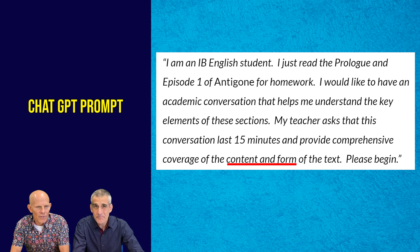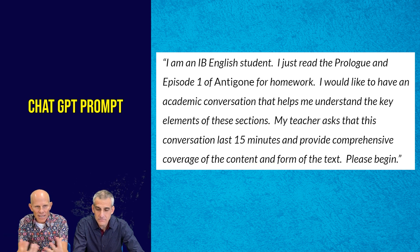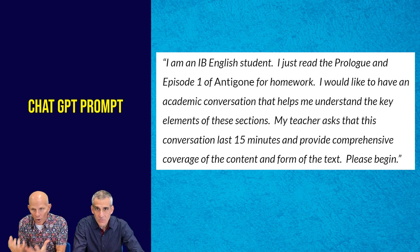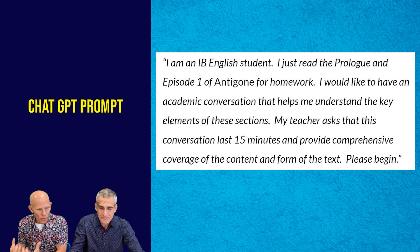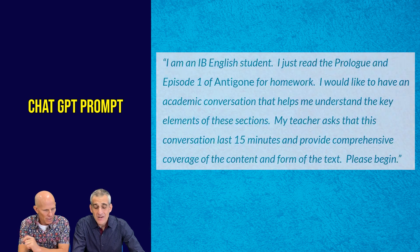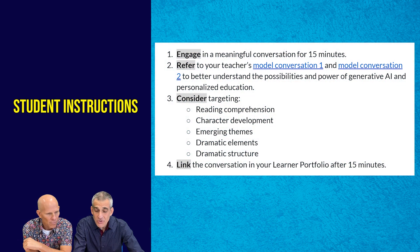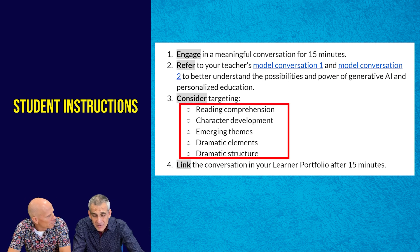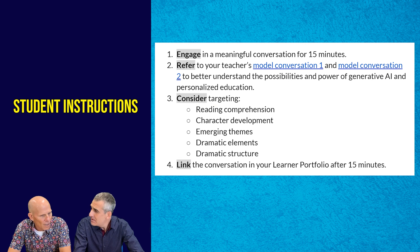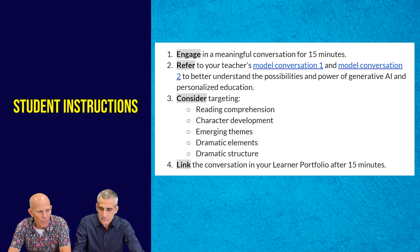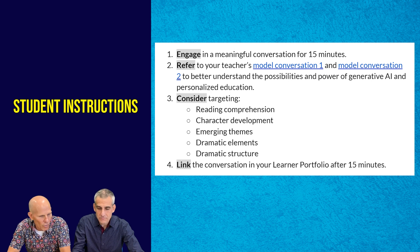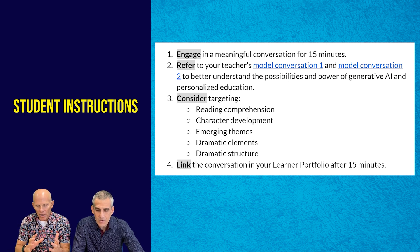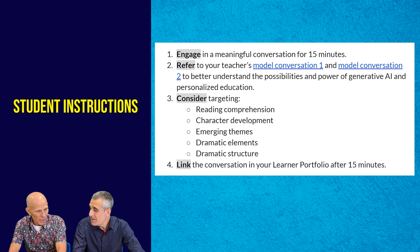The content is the text itself — the ideas, the themes, and the characters — but the form is how it's written: the language and all the dramatic conventions that are in that text. If we look at the actual instructions that we've given the student, you'll notice that we asked the students to target the following elements: reading comprehension, character development, themes, dramatic elements, and the structure of the play. We want to tell the student to think about all of those things as we're engaging with the text, and we're also directing the bot very specifically with our prompt.